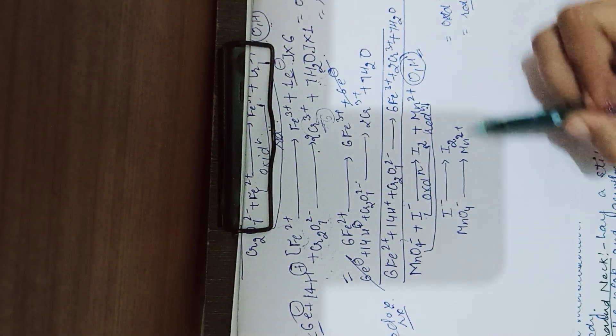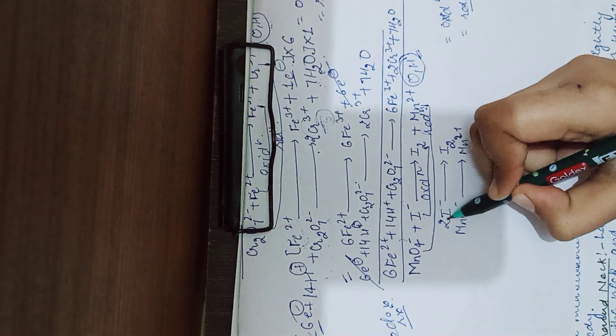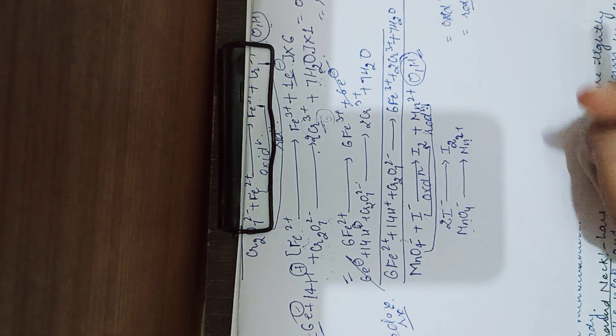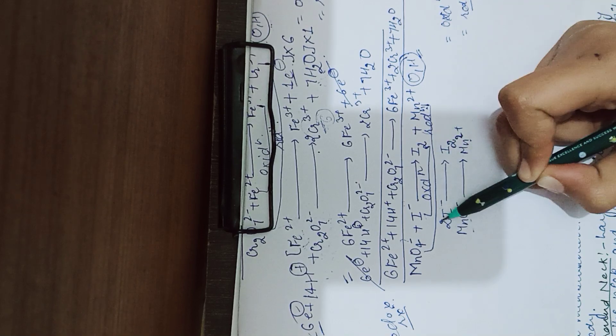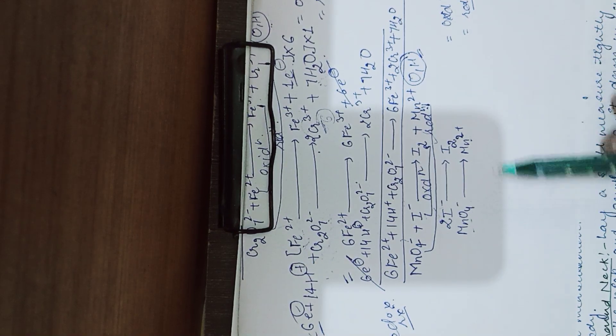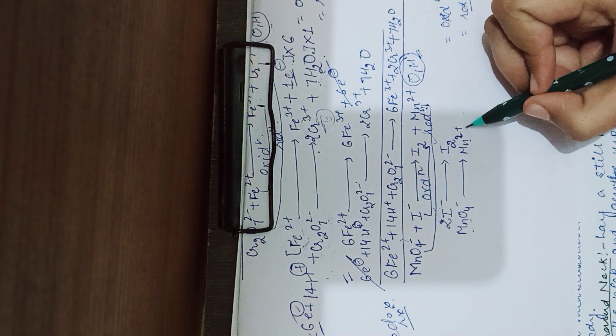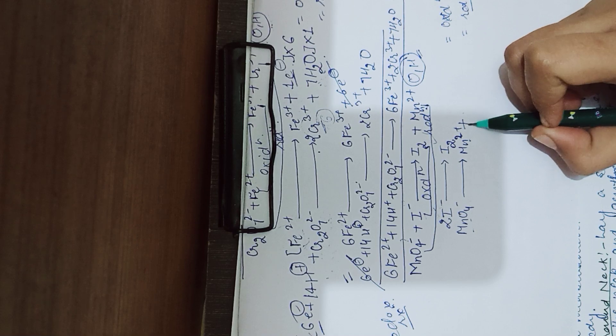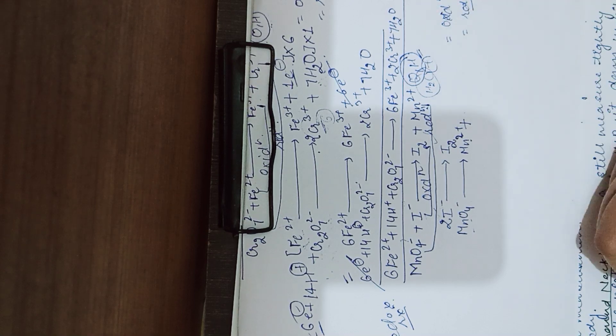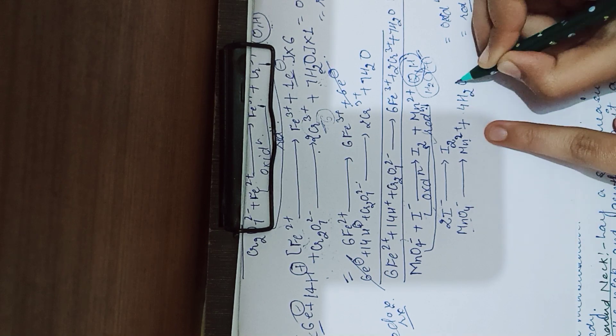Next, oxygen and hydrogen ko chod ke jo bhi dikhye, pahle usse balance karengi. So iodine 1 hai yahan, 2 hai, so 2 I negative gives you I2, it's balanced. Now oxygen ko balance karengi. Oxygen ko upar wali reaction mein reactant mein oxygen hai but product mein nahi, so we need to add 4 oxygen. We need to add water: 4 H2O.